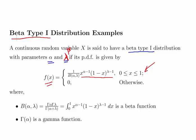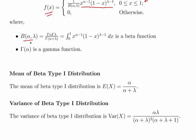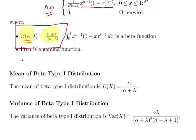This is defined for x between 0 and 1. We use the beta function here, which has a relationship with the gamma function. The beta function Beta(alpha, lambda) equals the gamma function of alpha times the gamma function of lambda, divided by the gamma function of alpha plus lambda. That's a very important identity to know, and it's also handy to recognize the general structure of the beta function in terms of integrals.